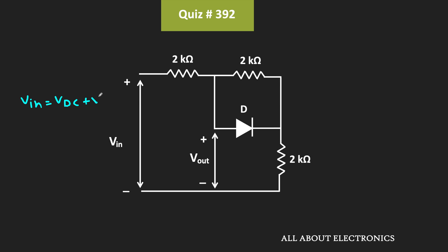plus V signal. Based on this input, we will get the output. This V signal is the small signal input and typically its range will be in the millivolt, while this VDC will decide whether this diode is conducting or not. So based on that, we will have two scenarios.